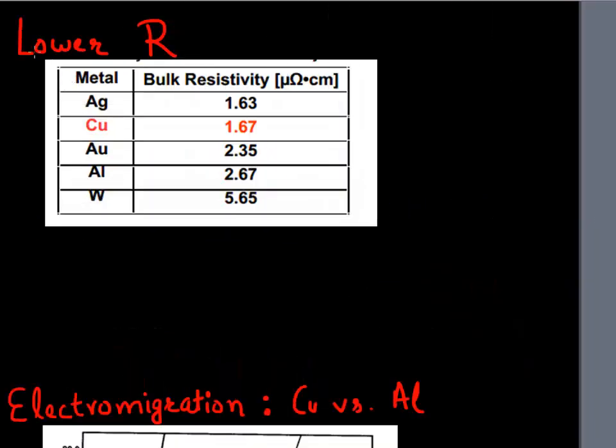So we have discussed several ways we can reduce the dielectric constant that helps in reducing this capacitance in our interconnect delay. So we can introduce air gap, we can introduce carbon, but what do we do about this resistance?